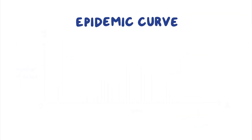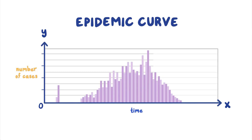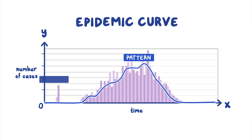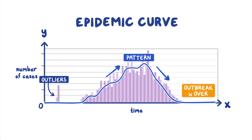You can learn a lot about an outbreak from an epi curve. You see the distribution of cases over time, and whether there are cases that stand apart from the overall pattern—these are called outliers, and they may provide information on how the outbreak started. You get a sense of the magnitude of the outbreak and whether cases are increasing, decreasing, or if the outbreak is over. Sometimes you can also make inferences on the outbreak's pattern of spread and even determine the most likely time of exposure.